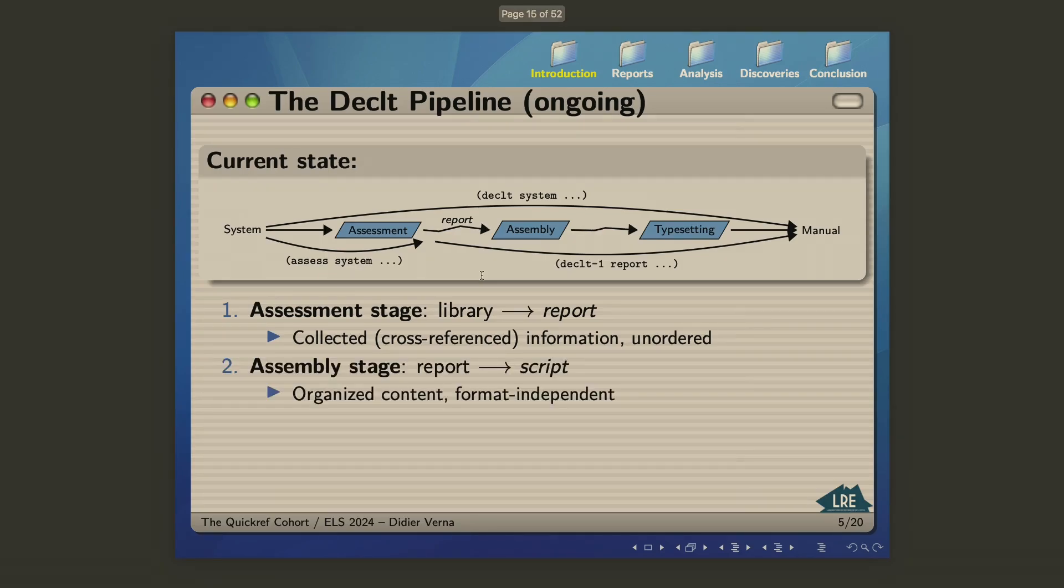The second stage is going to be called the assembly stage. This stage is going to create an organized data structure. And by organized, I mean this is the final organization that you would like to have in the reference manual. For instance, the place at which you would like to have all the public information in one chapter and all the private information in another chapter, so that a reader of the manual interested in only the public interface could go to the chapter containing all the publicly exported definitions. So the purpose is just to organize all the information, but it's still completely format independent.